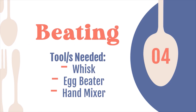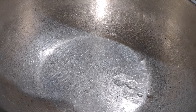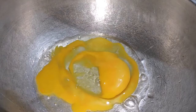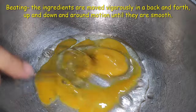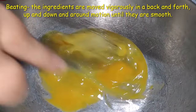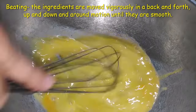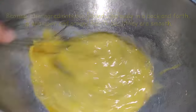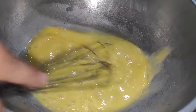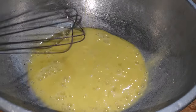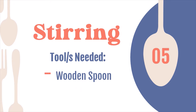Beating — tools needed: whisk, egg beater, or hand mixer. In beating, the ingredients are moved vigorously in a back-and-forth, up-and-down, and around motion until they are smooth. This can also be done using a wooden spoon.